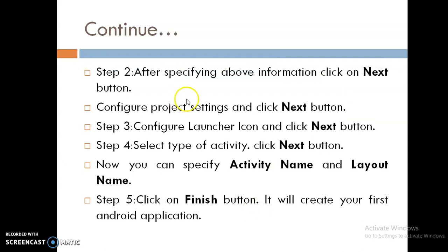In step two, after specifying the above information, click on the Next button, then configure your project settings, and click Next again. Then configure the launch icon and click Next. Then select the type of activity and click Next. Now you can specify the activity name and layout name, which is your XML file name used to specify the name of your layout. After that, click the Finish button. It will create your first Android application.